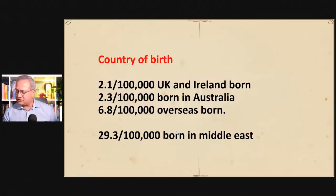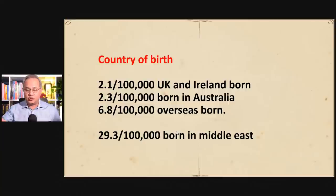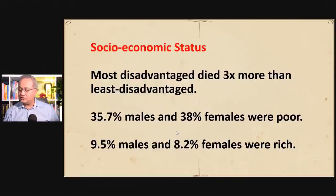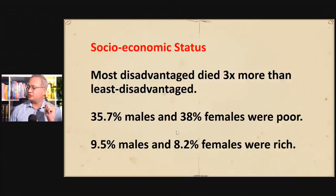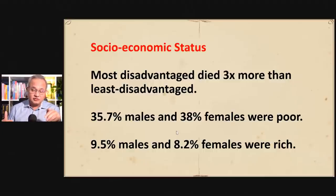Country of birth is very interesting. UK and Ireland-born had 2.1 per 100,000 deaths; Australia-born had 2.3 per 100,000; overseas-born overall was 6.8 per 100,000; and those born in the Middle East had 29.3 per 100,000 deaths while in Australia. Regarding socioeconomic status, the most disadvantaged group died three times more than the least disadvantaged.